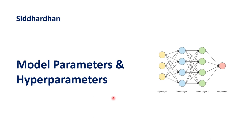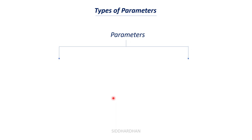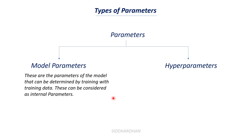Let's get started with the first topic: model parameters and hyperparameters. It's important to understand the difference between these two. The two types of parameters for a machine learning model are model parameters and hyperparameters. Model parameters are parameters of the model that can be determined by training with training data — these can be considered as internal parameters.